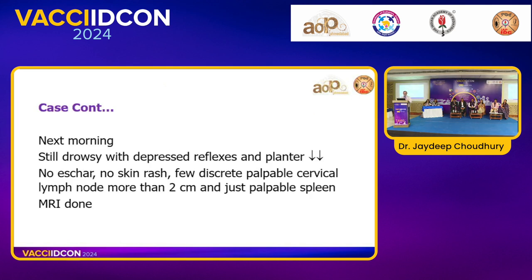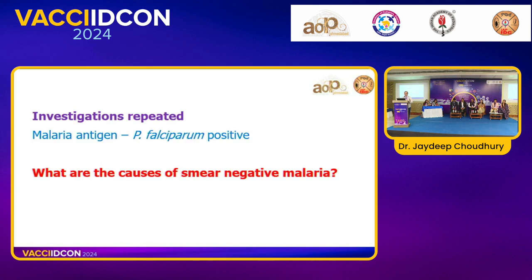The next morning the child was still drowsy with depressed reflexes, plantar was flexor, no skin rash, few discrete palpable cervical lymph nodes more than two centimeters, just palpable spleen. MRI was done to exclude other causes. Further investigations were repeated and now Plasmodium falciparum antigen came positive. Initially the malaria smear was not detectable, but the malaria antigen test confirmed it. Dr. Maritun Jai was asked about causes of smear-negative malaria.